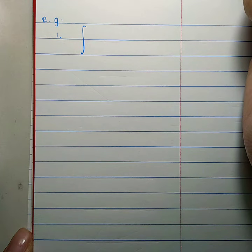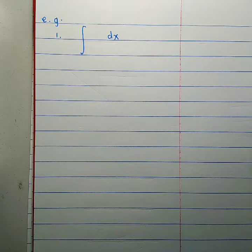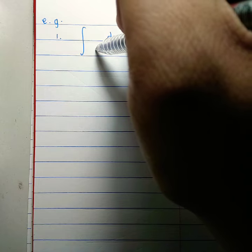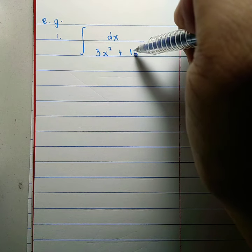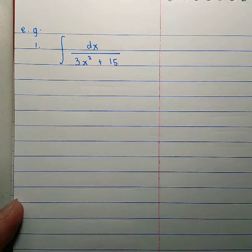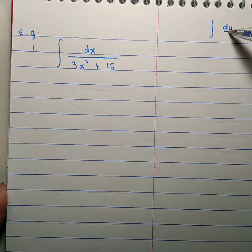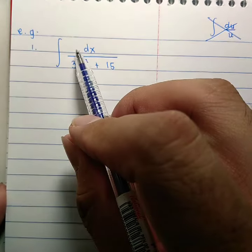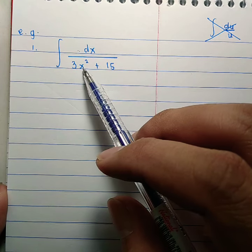Example: for the first example, we will use the first formula. The case is u squared plus a squared in the denominator with no square root. Let's take the integral of dx over 3x squared plus 15. Since there is no x in the numerator, we cannot use the simple du/u formula. We will use the additional standard formula instead.